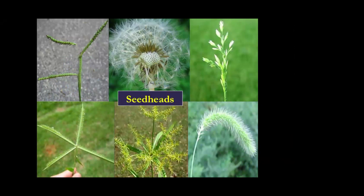Key characteristics for identifying weed species start with seed heads — this is usually the first characteristic I look for. Most grassy plants have a very distinct seed head indicative of a certain species. On this slide, the top left shows Dallasgrass with alternating spikes on the seed head structure. The bottom left shows crowfoot grass where the spikes join together at the main point at the end of the seed head stem. These are all very good characteristics to quickly identify a weed species.